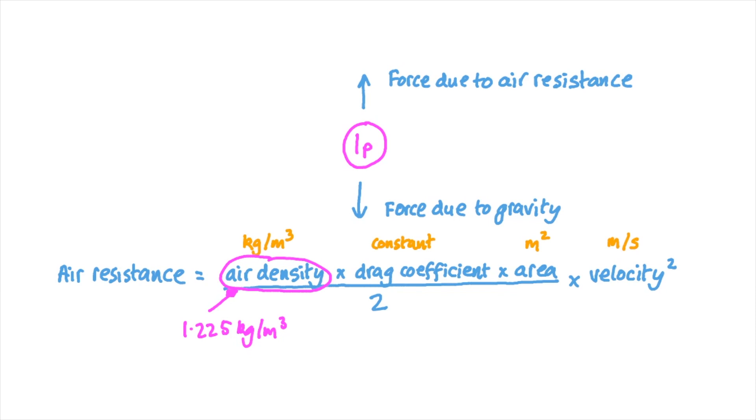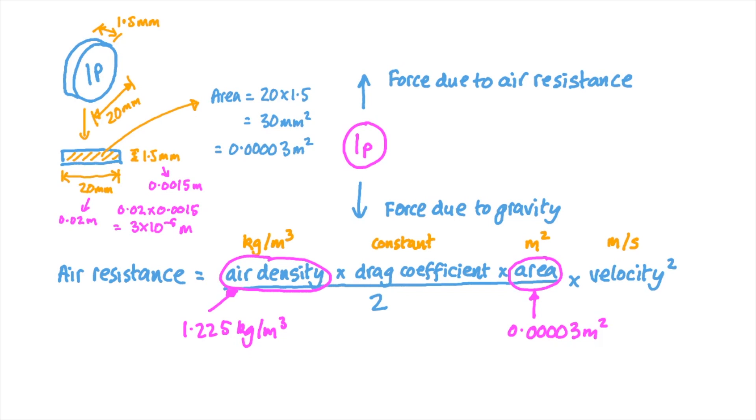A reasonable estimate for the air density at around 15 degrees Celsius at ground level is about 1.225 kilograms per cubic meter. A British penny has a diameter of about 20 millimeters and a thickness of about 1.5 millimeters, so if it's on its side falling, it exposes an area of about 30 square millimeters—that's 0.000003 square meters.